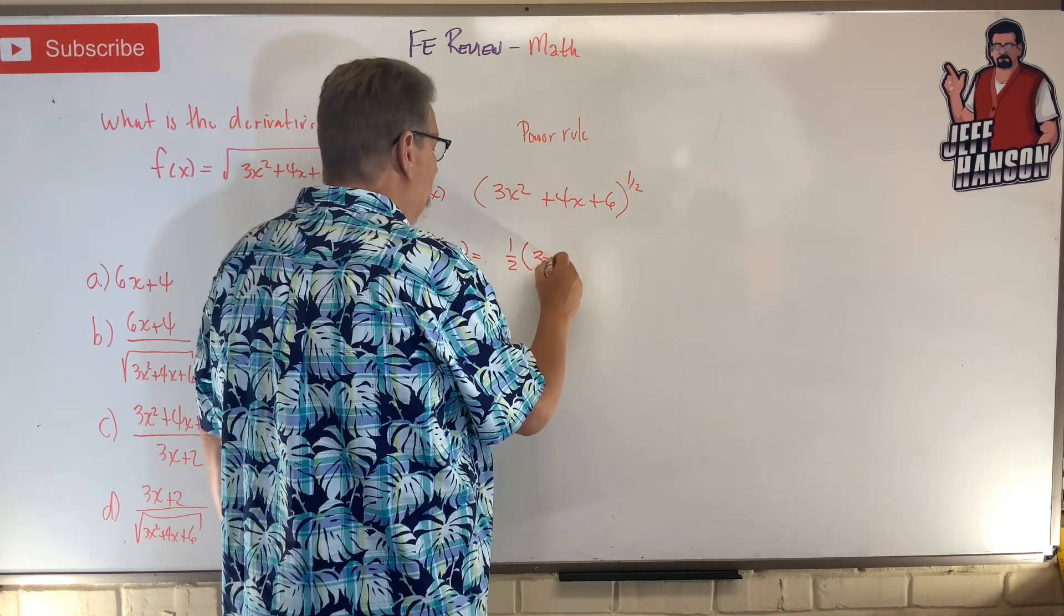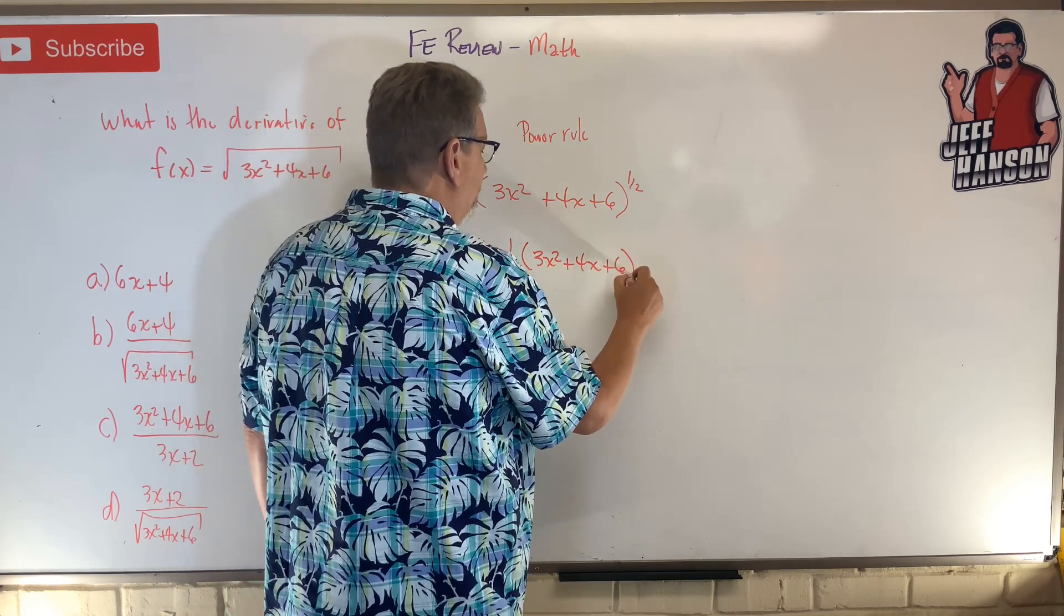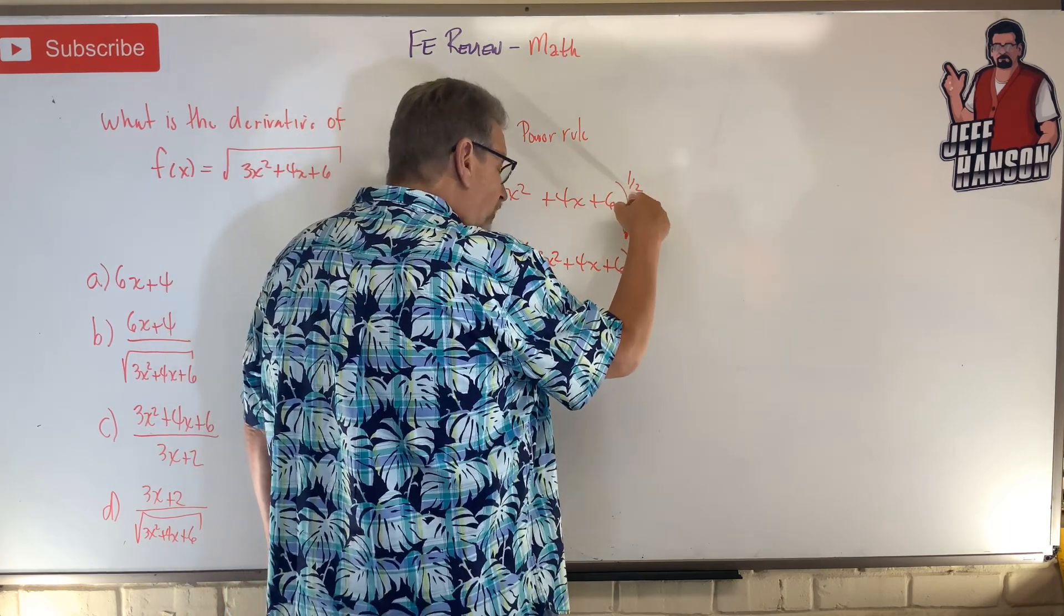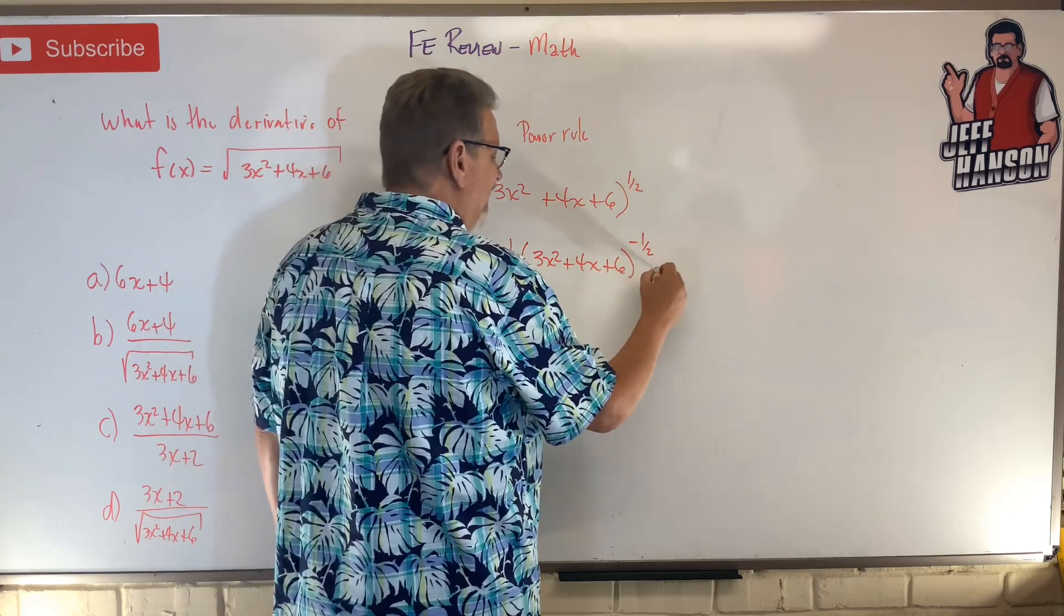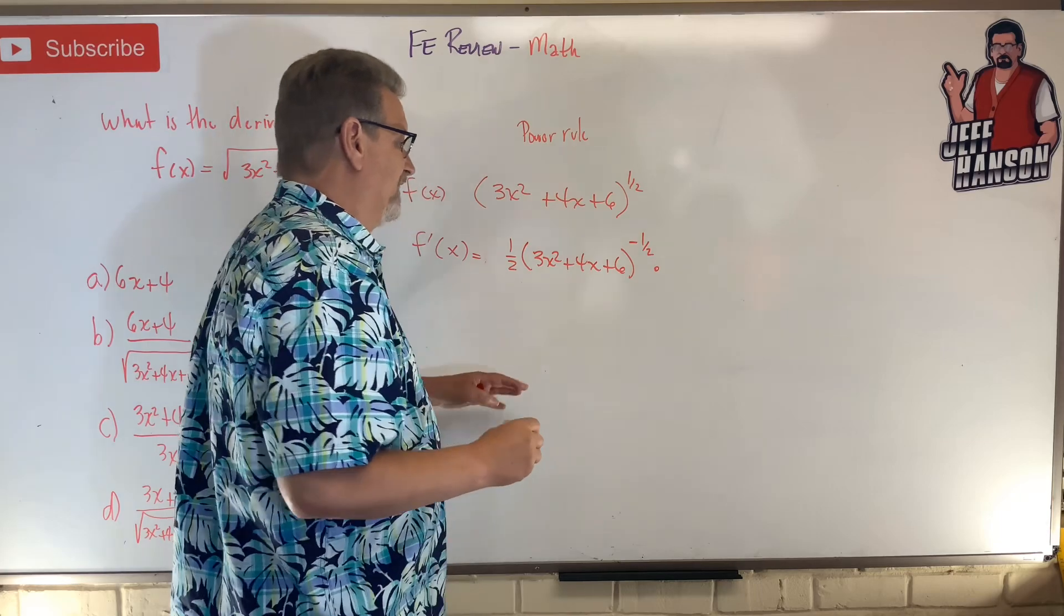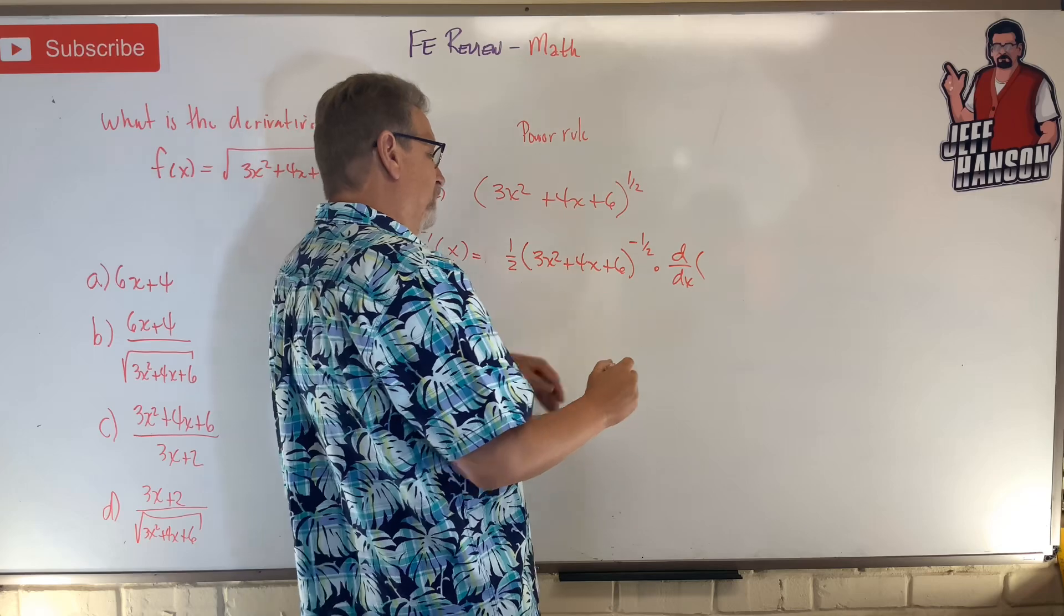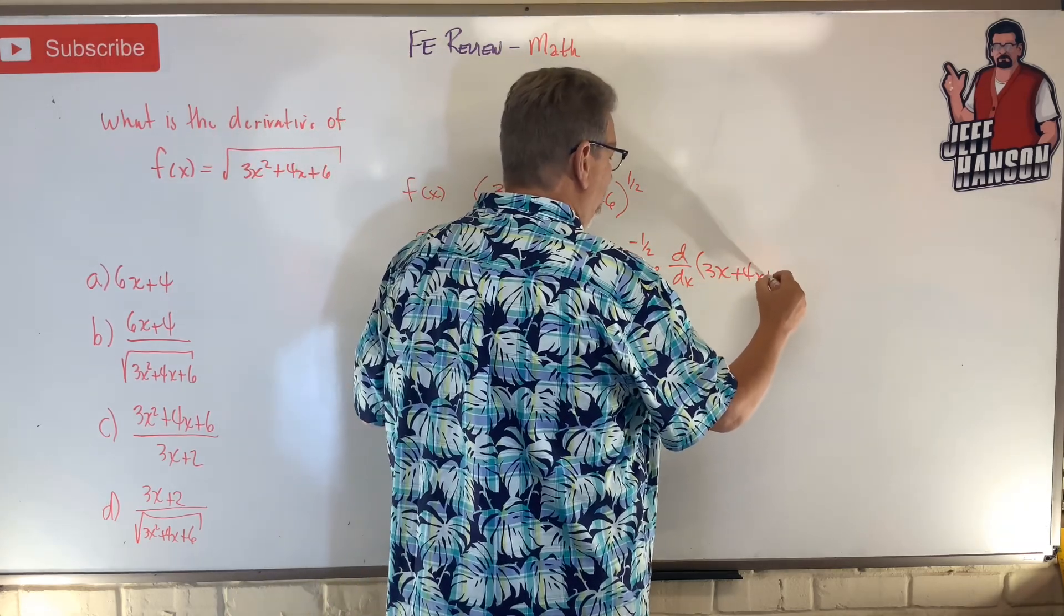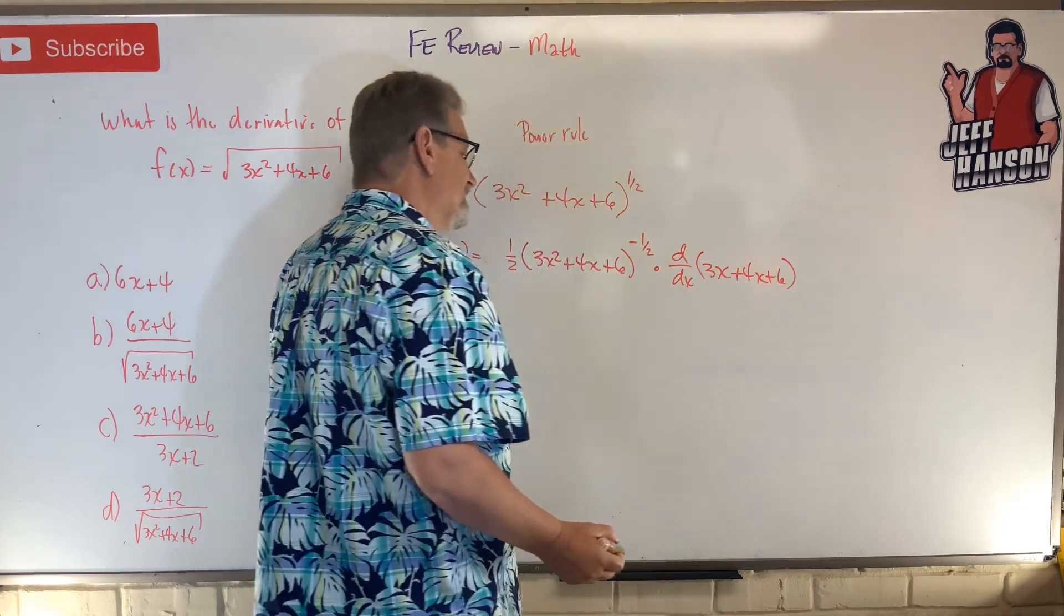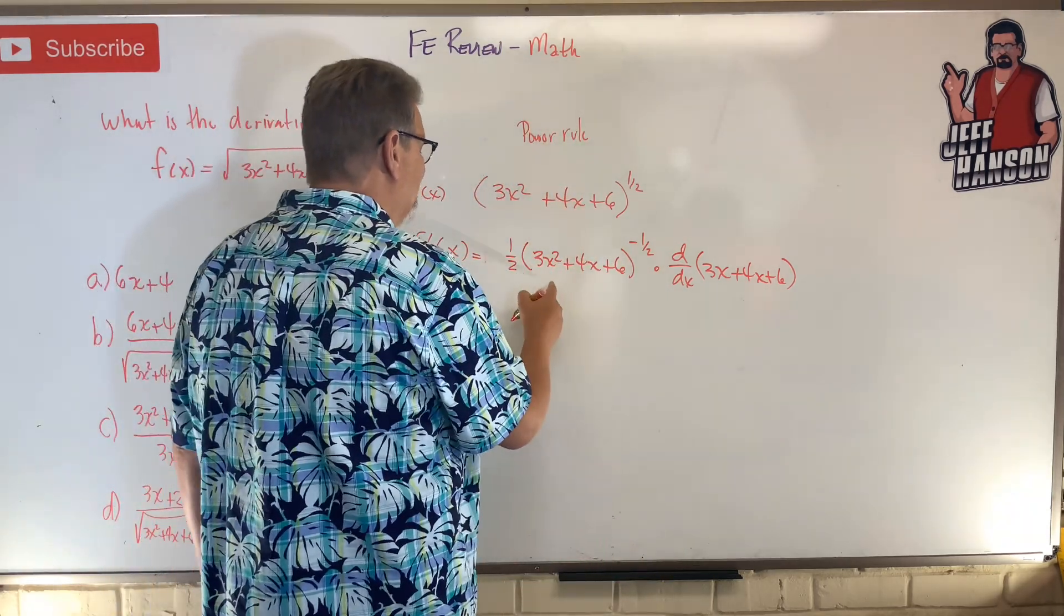1/2 times 3x squared plus 4x plus 6, times the derivative of what's inside the parentheses, so 3x plus 4x plus 6. Okay, and so you know what this is here.